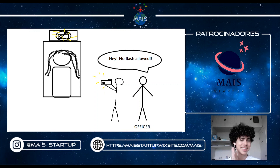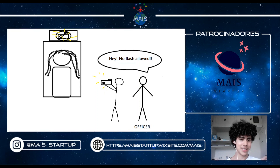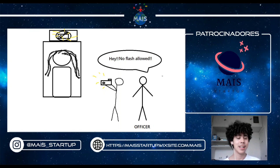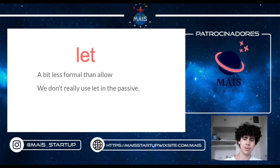Now another example — the state of something being allowed or not. You can see an officer at the Mona Lisa museum. You can't take photos with flash there — it's mandatory. The officer sees someone taking pictures with flash and says 'no flash allowed,' meaning it is prohibited.